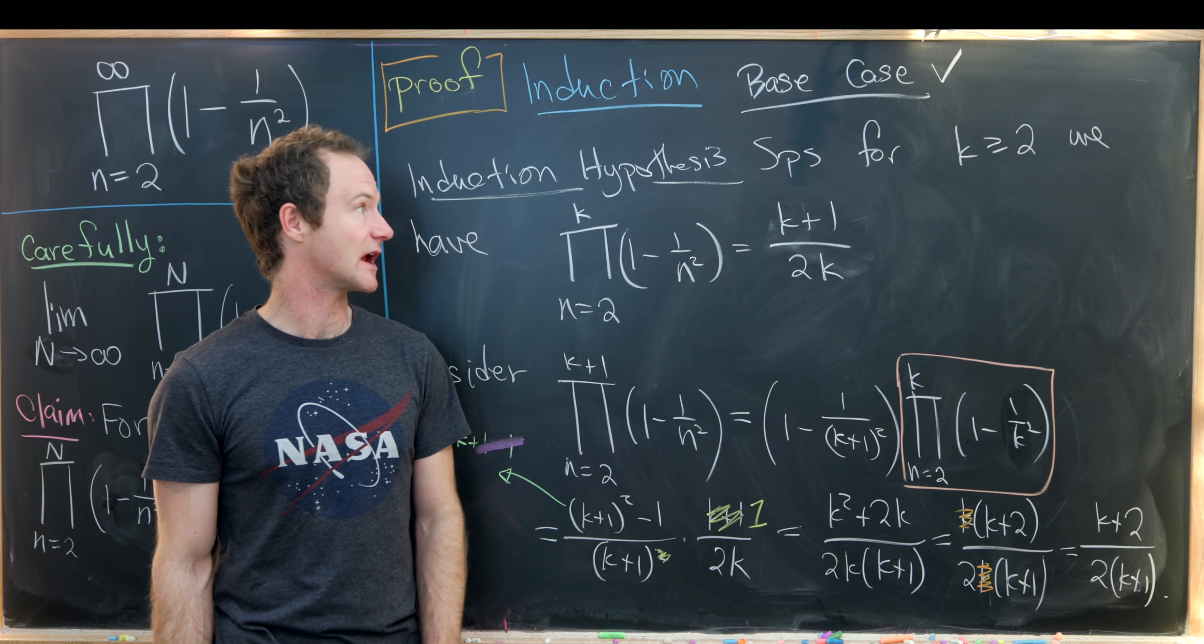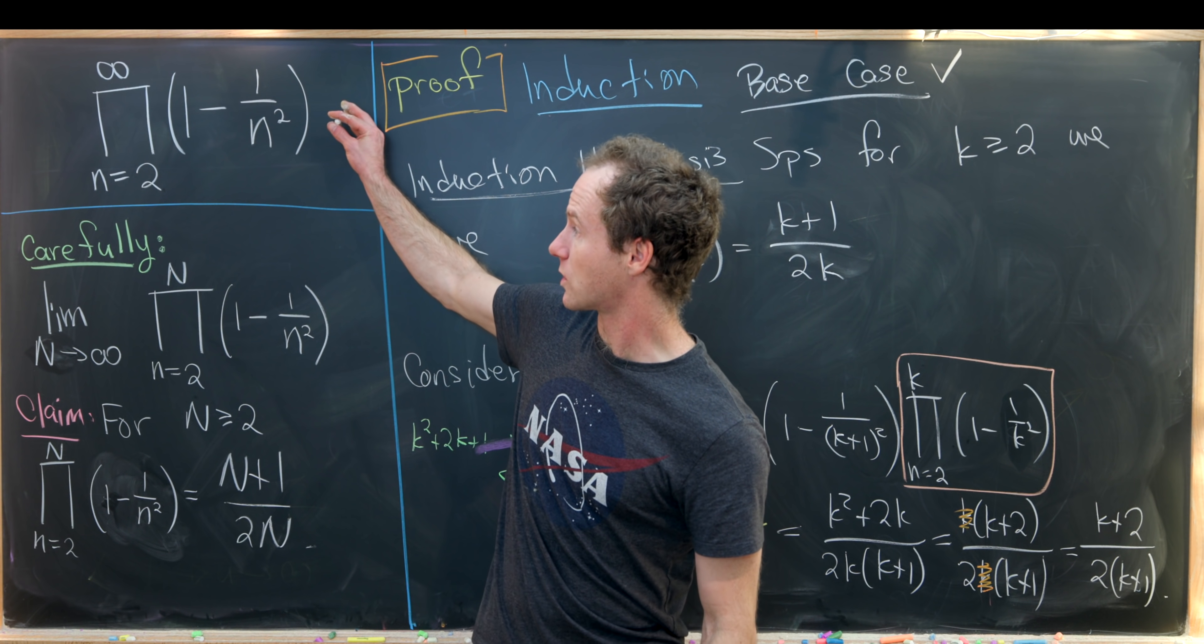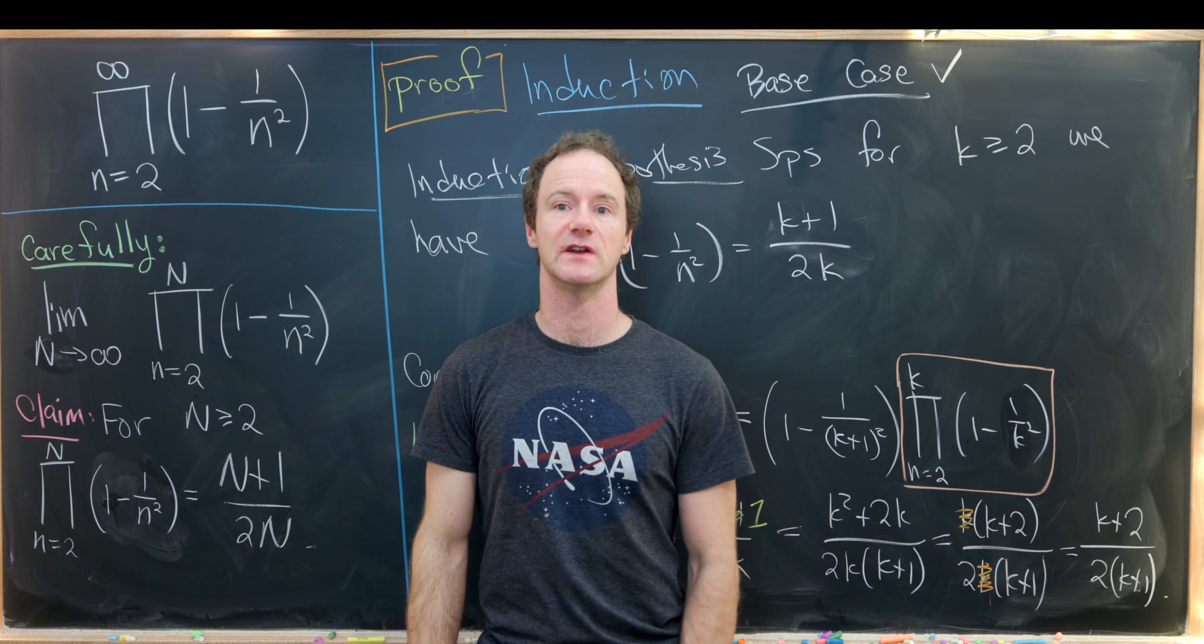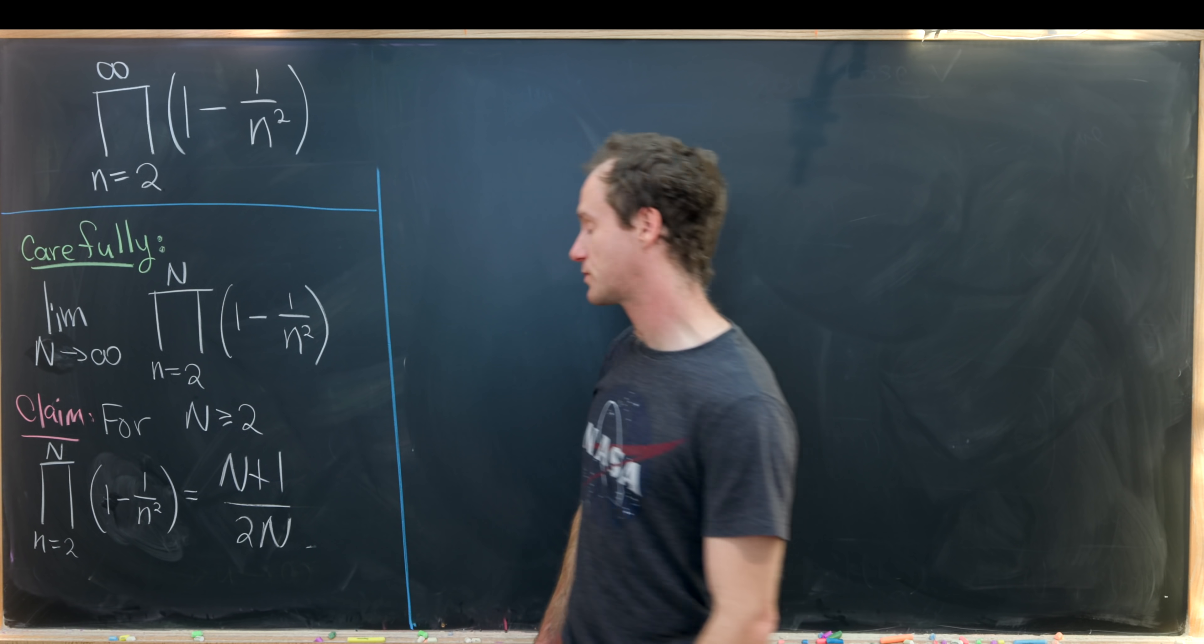Okay, so now that we've got this taken care of, let's apply this closed form in order to find this infinite product. So we just got done finding a closed form for our nth partial product. Now we're ready to finish this off.